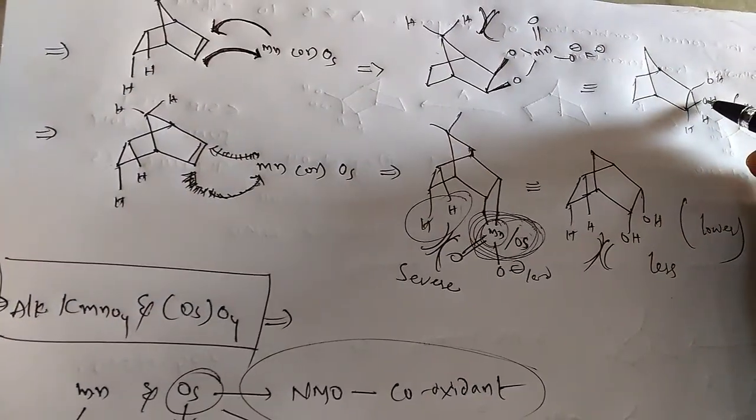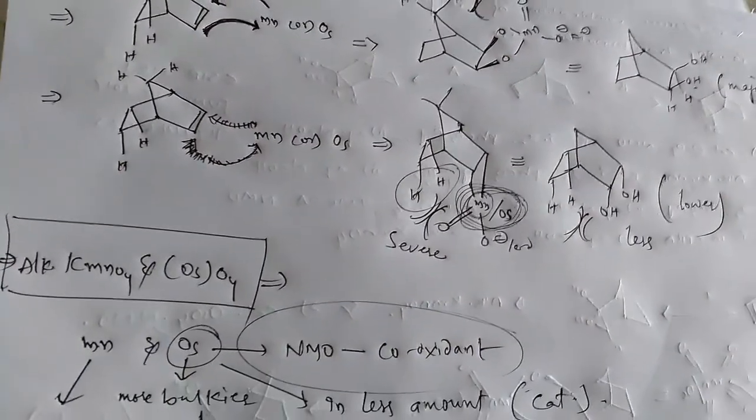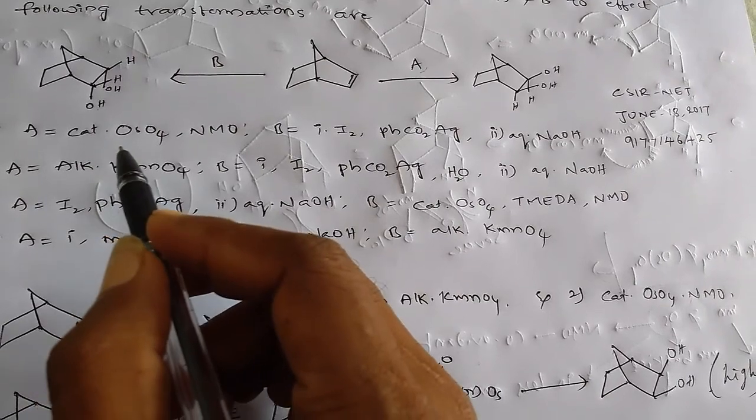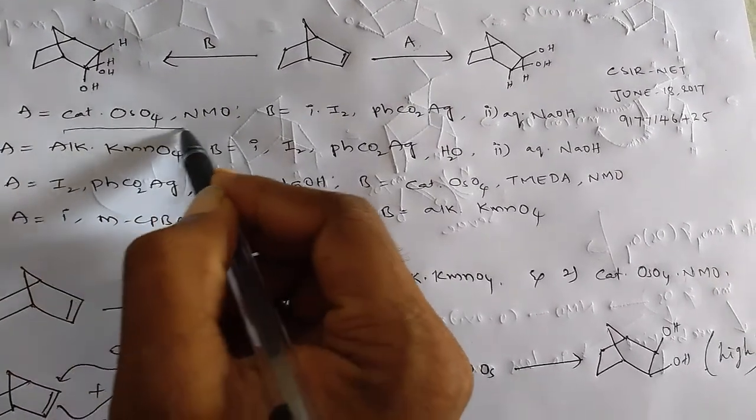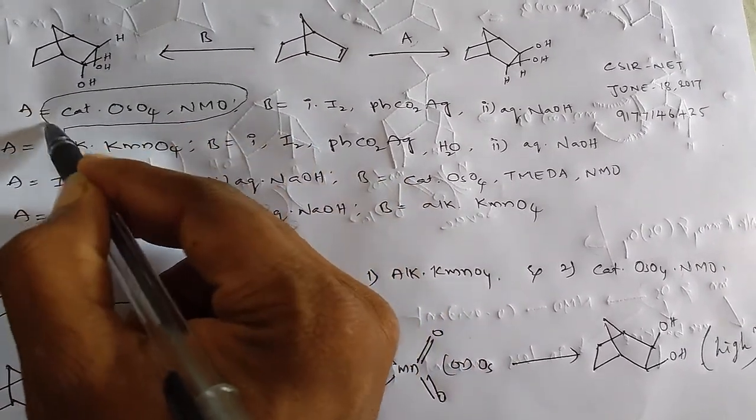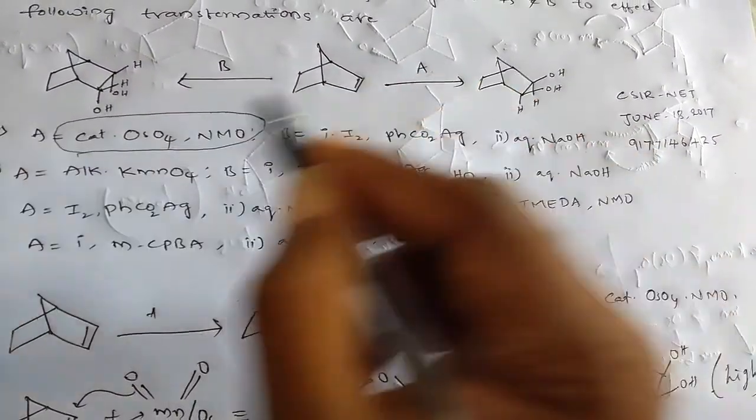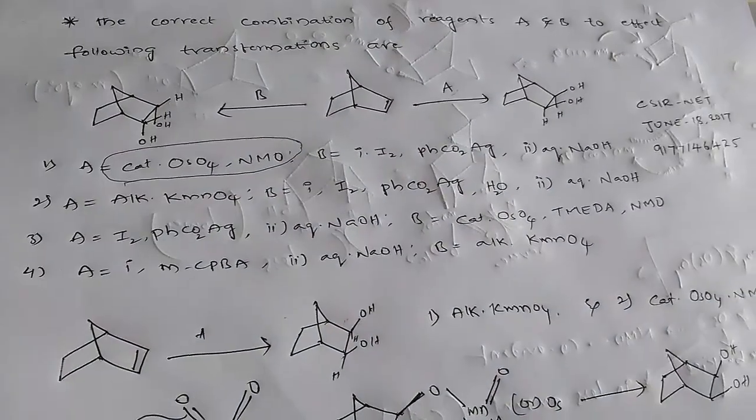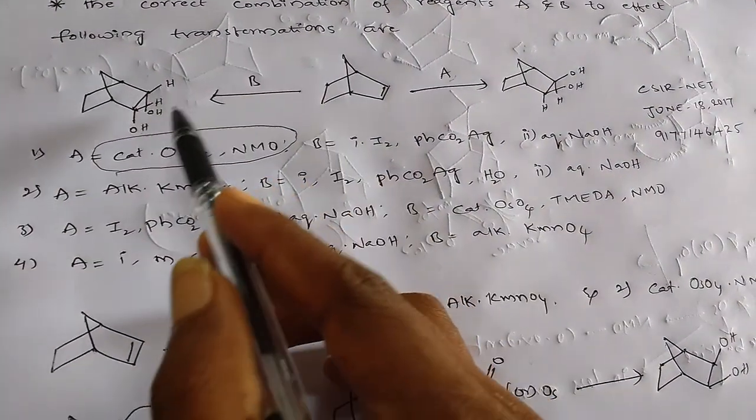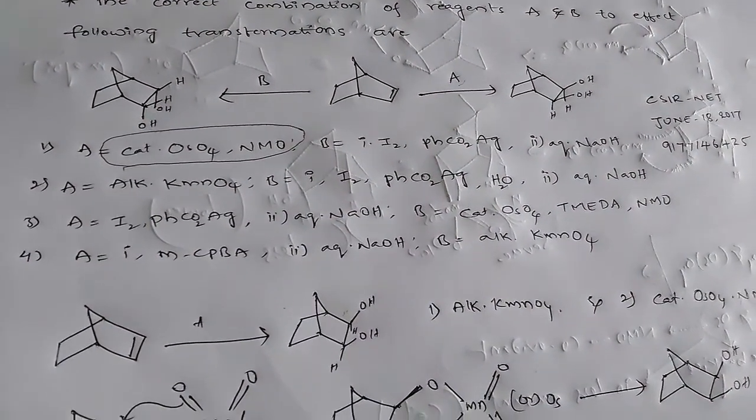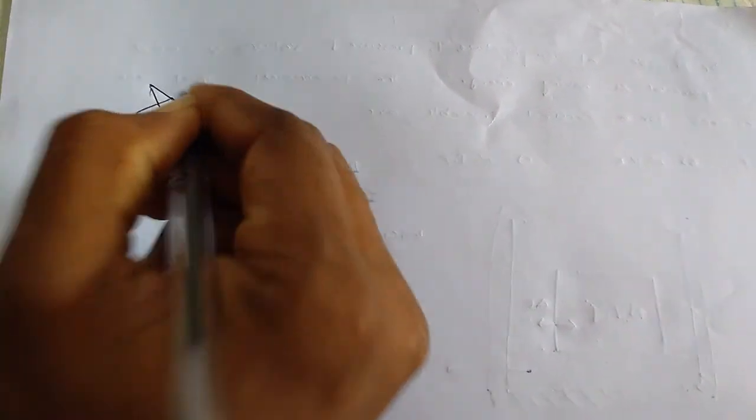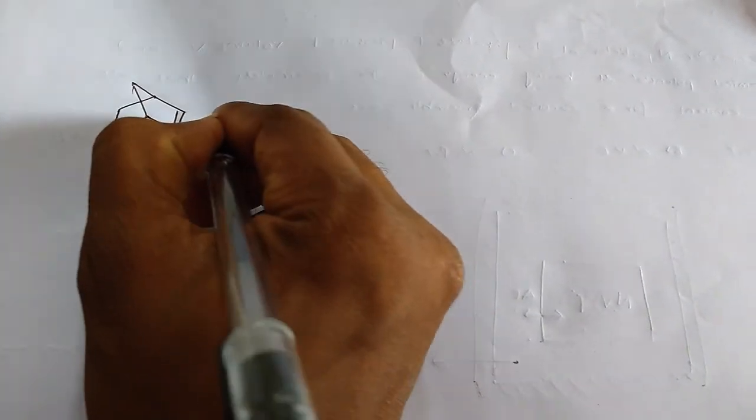That's why we can get only this major product. So in the given options, osmium tetroxide is much better catalyst to get this product. In option A, catalytic amount of osmium tetroxide with NMO is used, so A.